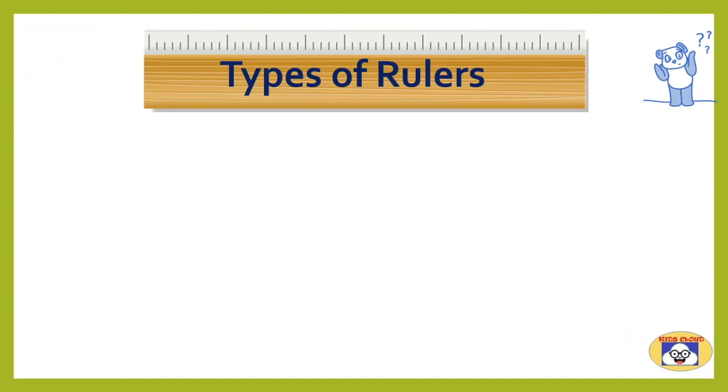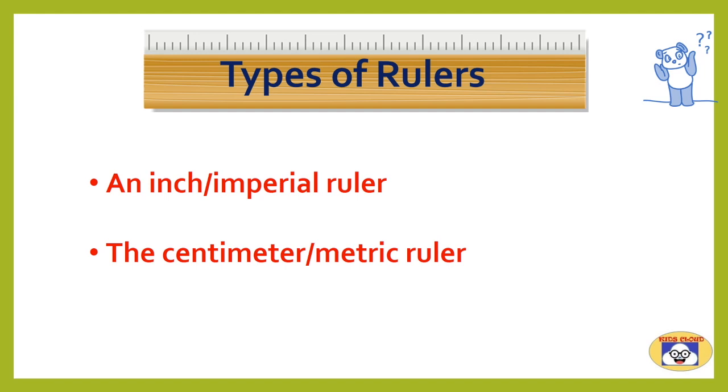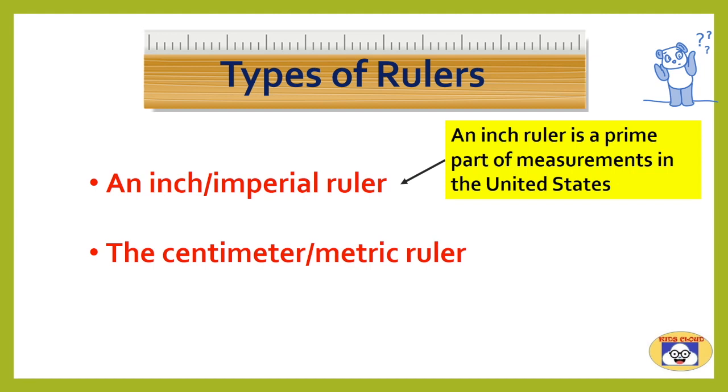There are two measuring systems: imperial and metric. Based on these systems, two types of rulers are there: an inch or imperial ruler, and second one is the centimeter or metric ruler. An inch ruler is a prime part of measurements in the United States, while around the world the centimeter or metric ruler is used.